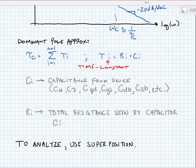These capacitances for devices are typically on the order of a few femtofarads, say 10 femtofarads up to around 10 picofarads depending upon the size of the device. The Ri is the total resistance seen by capacitor Ci and this comes from all resistances.